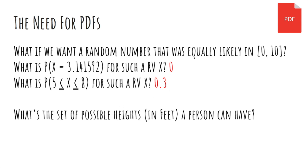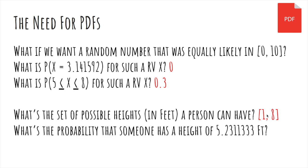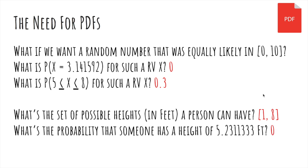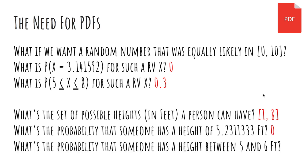What's the set of possible heights in feet a person can have? Let's say everyone is between 1 and 8 feet tall. Then the probability that someone has a height of exactly some value is 0, because there are infinitely many heights. The probability that someone has a height between 5 and 6 feet, though, is non-zero, because it's an interval.